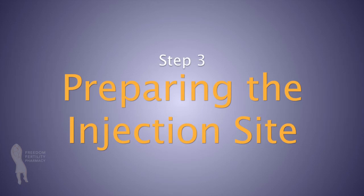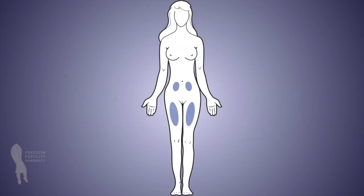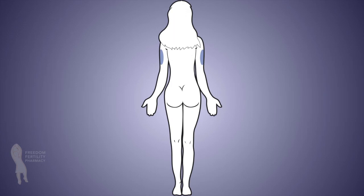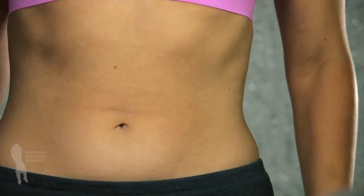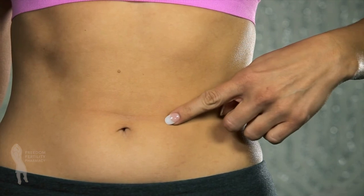Choose an injection site as directed by your health care provider. Common sites for subcutaneous injection include the abdomen, top part of the thigh, or back of the arm. For this injection, we will be demonstrating using the abdominal site.